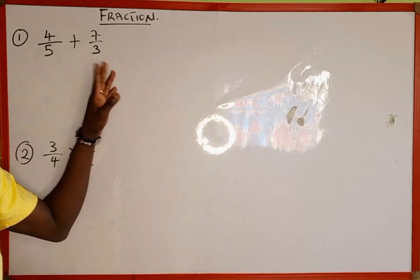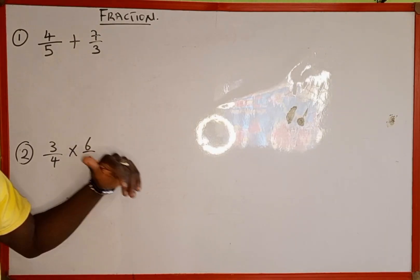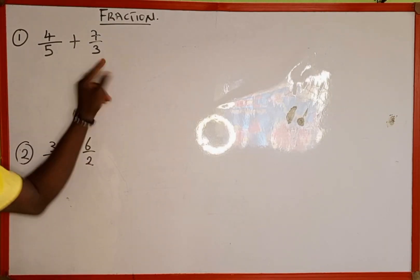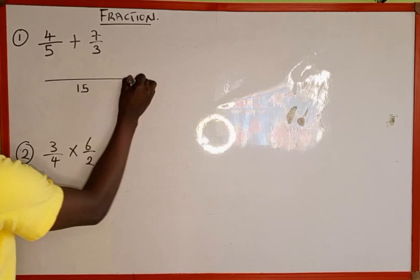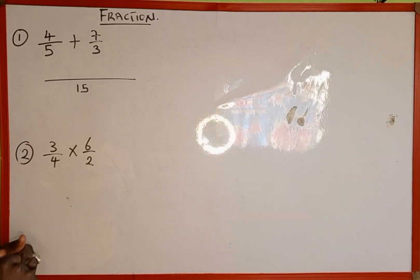So the answer is going to be our LCM: 5 multiplied by 3 is 15. So 15 is going to be the LCM. Then we rule the division line.